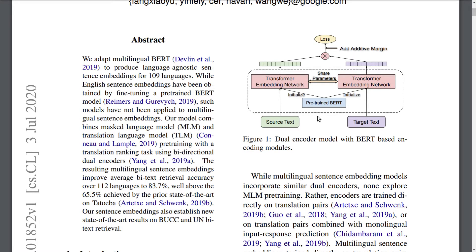At the core of the architecture they propose, shown in Figure 1, is a pre-trained BERT model trained on many languages using the Masked Language Modeling objective. They use a BERT-base model, pre-trained in the same way as the multilingual BERT method reported in the original BERT paper, and then use this model to initialize a transformer encoder network.